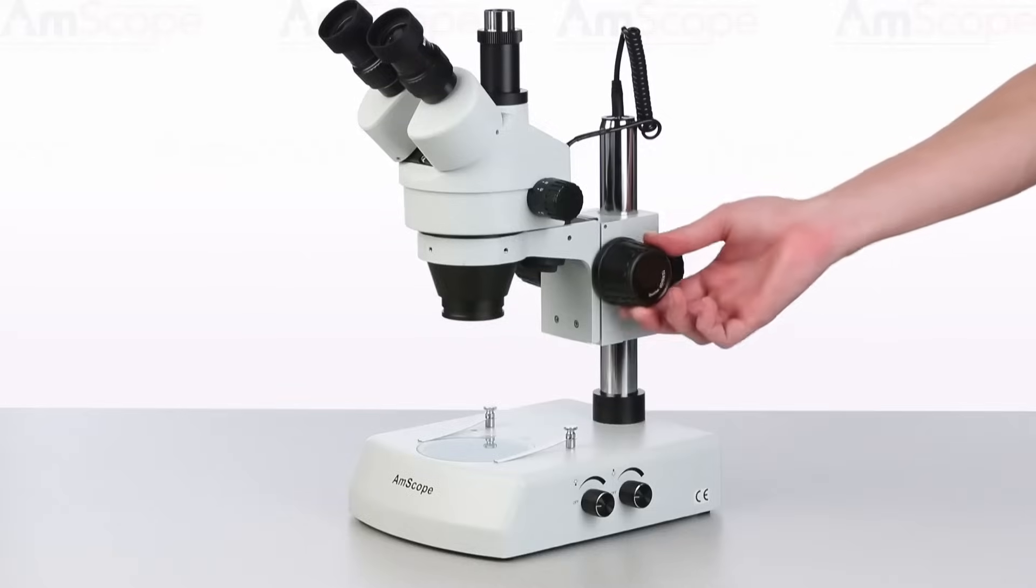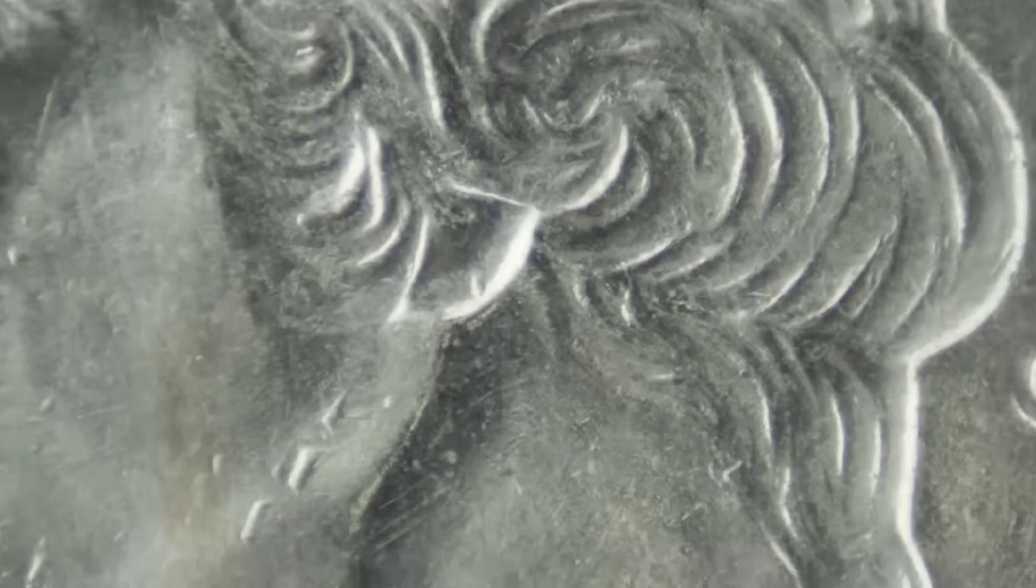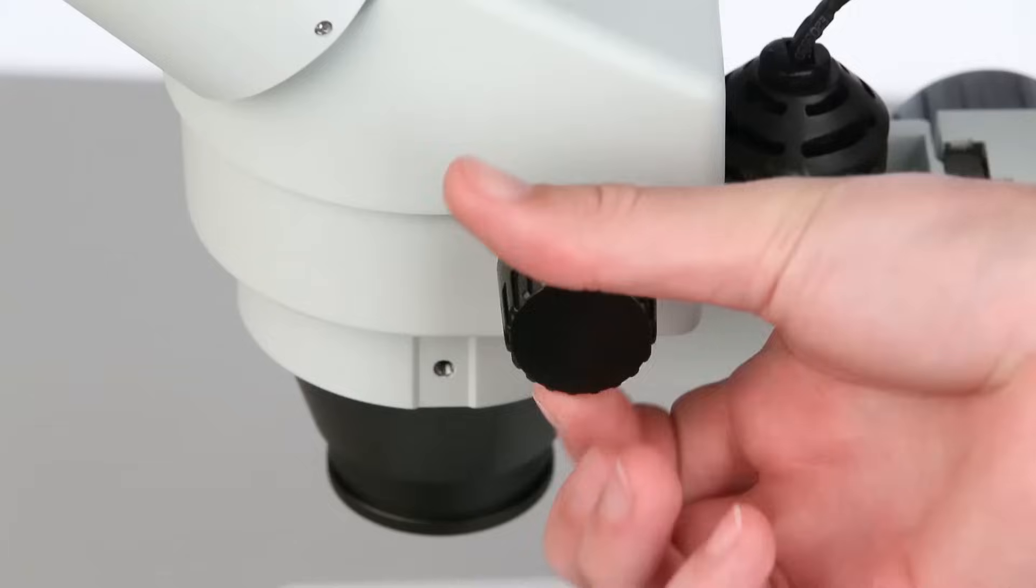To test the focus accuracy, focus on a test subject at low magnification, then move to the highest magnification to fine tune the focus point. Now move through the zoom range, making minor adjustments to the diopters as needed until the focus is relatively consistent.